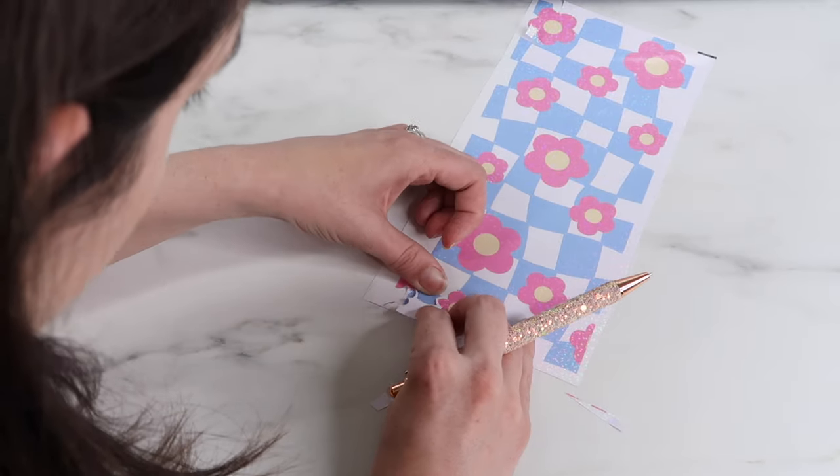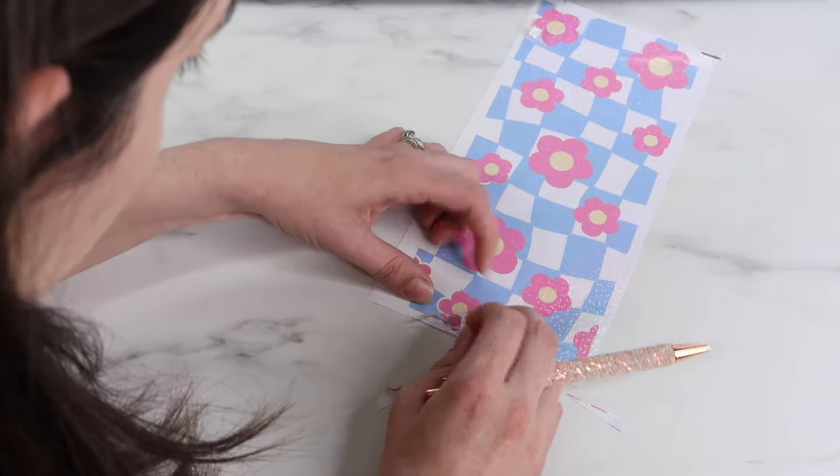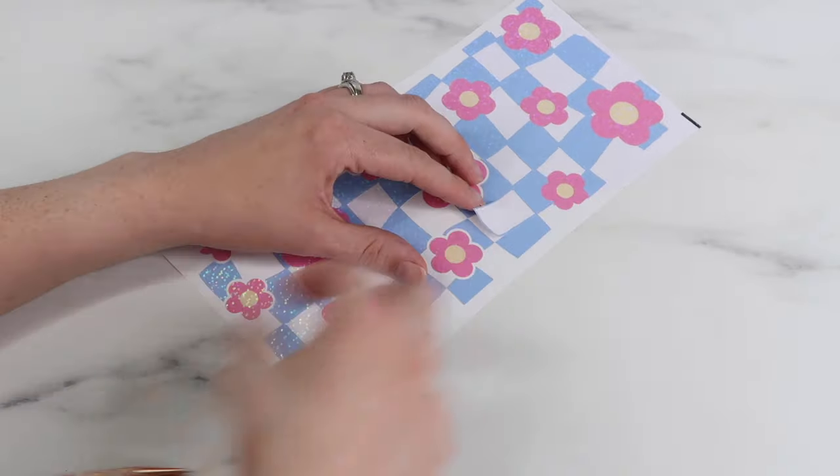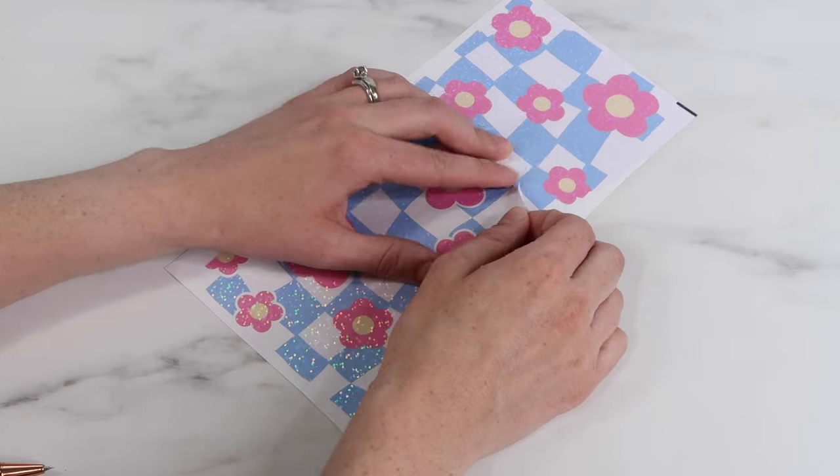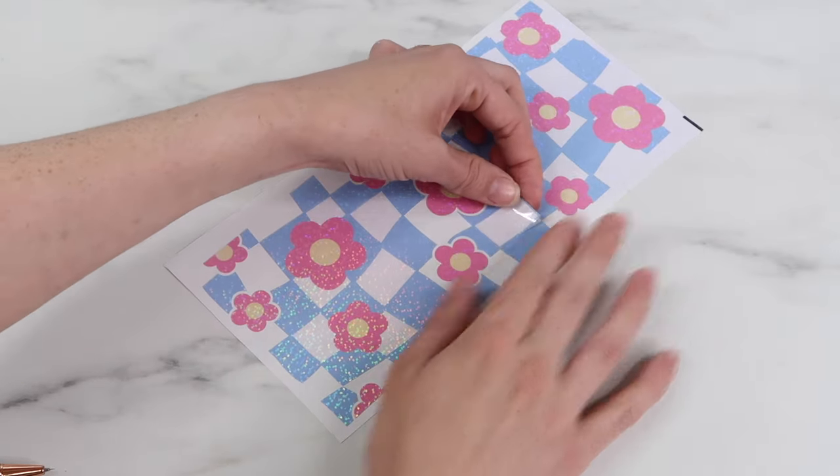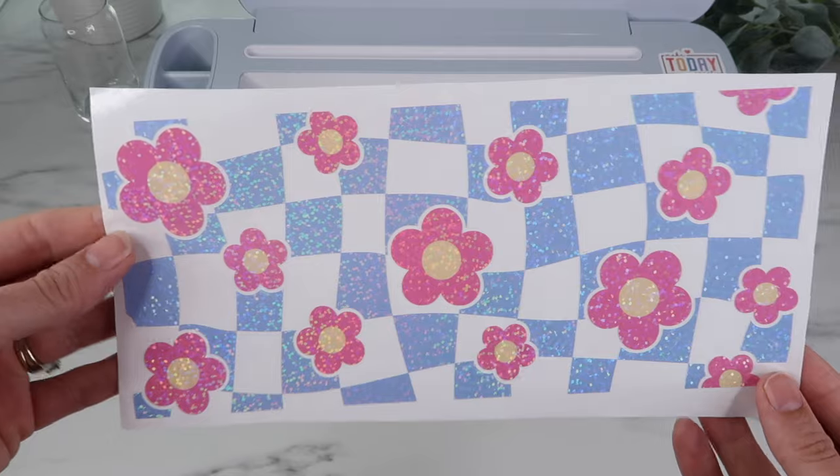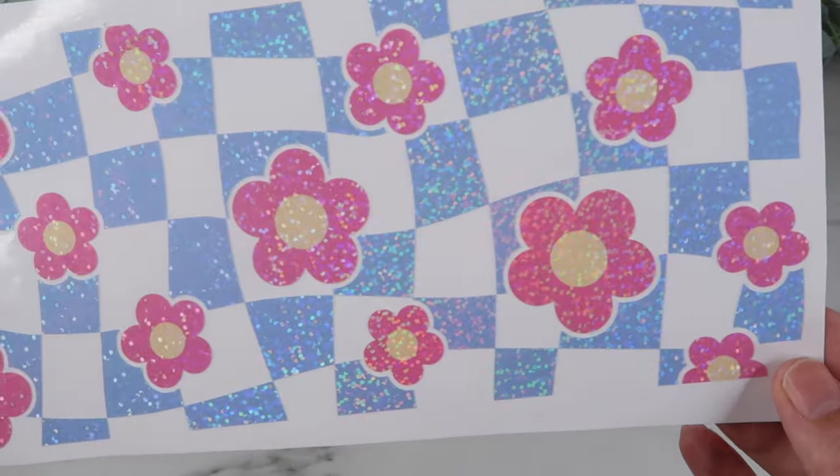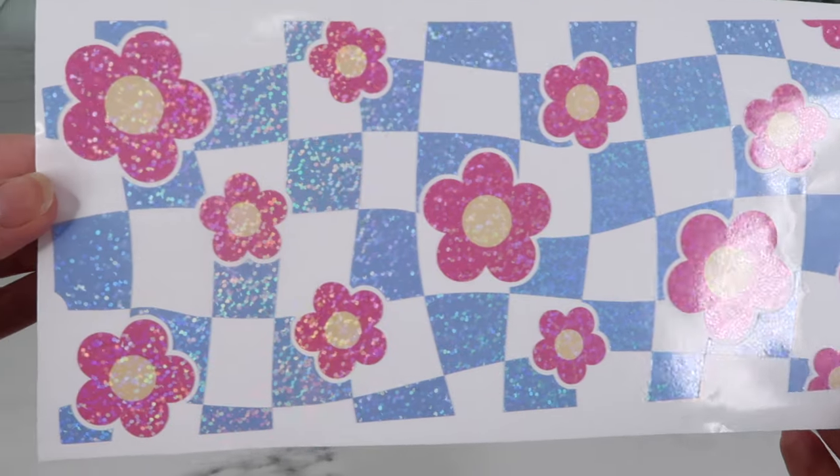I weeded a little bit more on camera but then did the rest off camera. It just felt like it took forever, so I would definitely try a different setting if you're using this particular laminate sheet. Here's how it looks when it's all weeded. The laminate holographic sheet is so pretty on top of it.